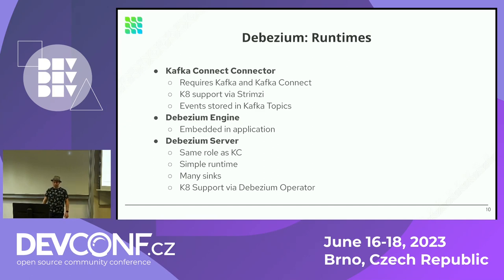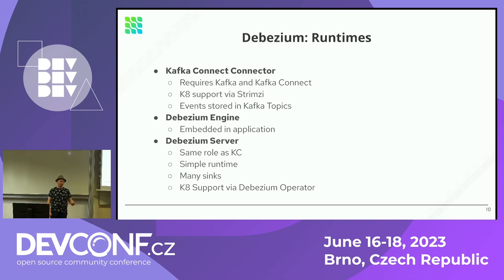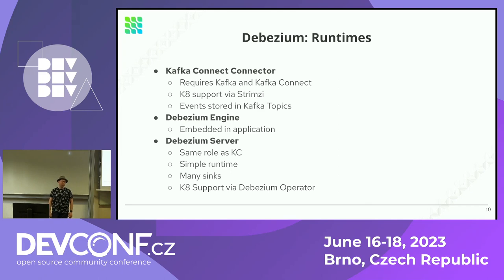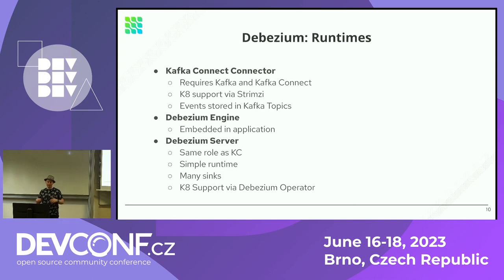You can deploy Debezium as a Kafka connector on top of Kubernetes using the Strimzi operator. The other option is embedding Debezium into your application through something we call Debezium Engine. Debezium Engine actually started as a test dependency because we needed means to prove that the connectors work, but as it's usually the case with good testing tools, it became used in production by some community members, so we decided to improve it and built another runtime around it — and that's how Debezium Server was born.